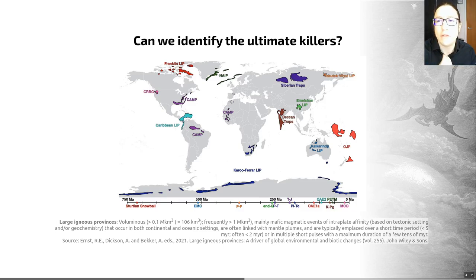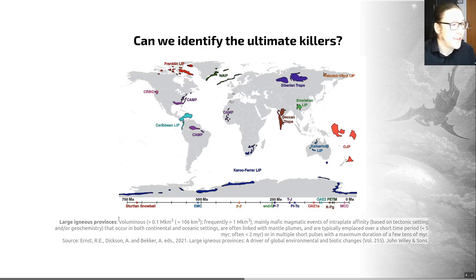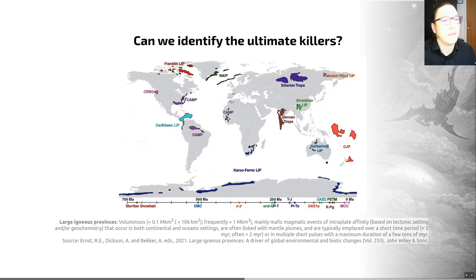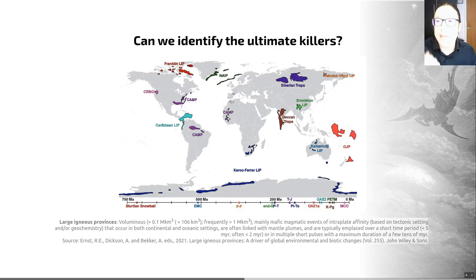It's increasingly widely thought that things called large igneous province eruptions may be the driver of many extinctions. I've put a definition on the slide here. Basically, what large igneous provinces are is really big and really rapid volcanic eruptions that have occurred throughout the Phanerozoic — the Cambrian through to the late Cretaceous period. We certainly know that a temporal link between volcanism and extinction is well established in at least half of the major extinctions in the Phanerozoic.